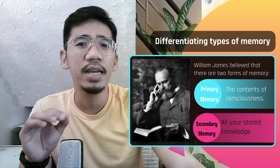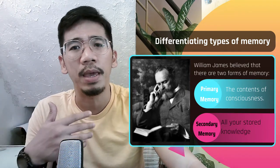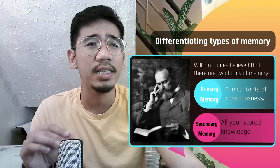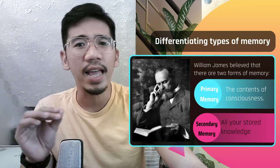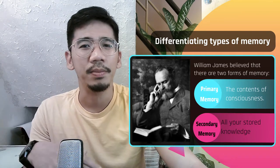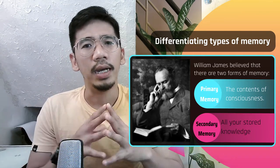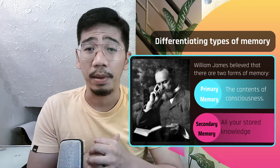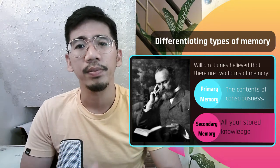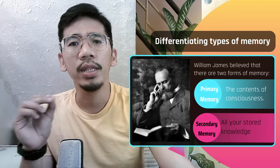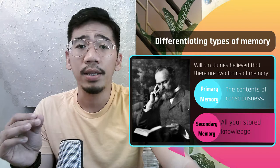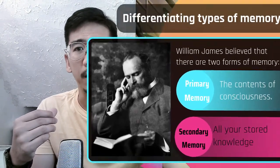William James' distinction between two types of memory was largely ignored until American psychologists Richard Atkinson and Richard Schiffrin revisited it. They created the multi-store model of memory, which we will discuss in this section — in particular, how it helps to shed light on short-term memory.